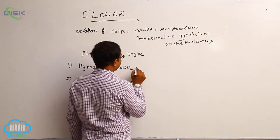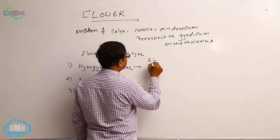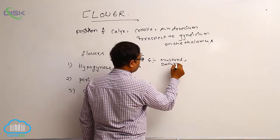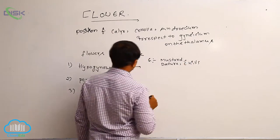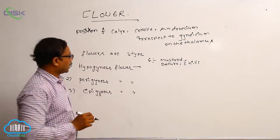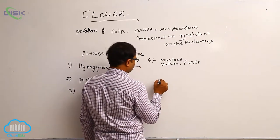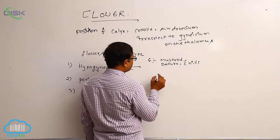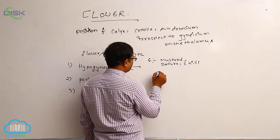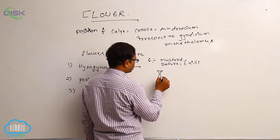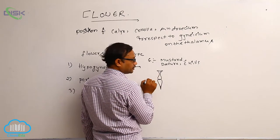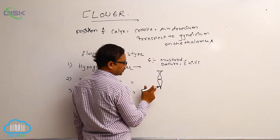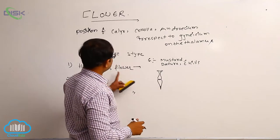So hypogynous flower. In hypogynous flower, examples include mustard, datura, chili, hibiscus, and so on. In hypogynous flower, the thalamus is cone-shaped. Above the thalamus, at the highest position, Gynoecium is present. The remaining floral parts — Calyx, Corolla and Androecium — are formed from the below part of that Gynoecium on the thalamus. So that is known as hypogynous flower.